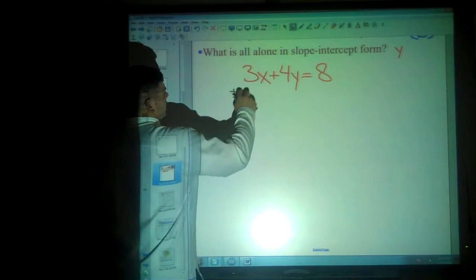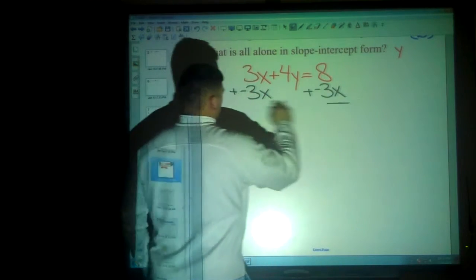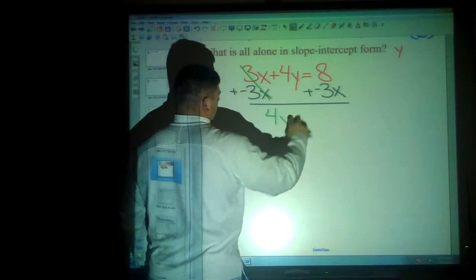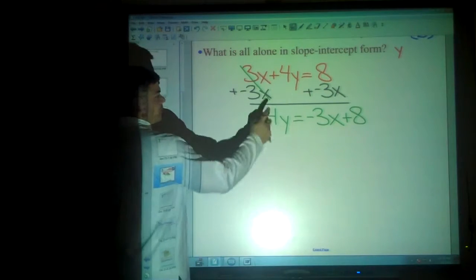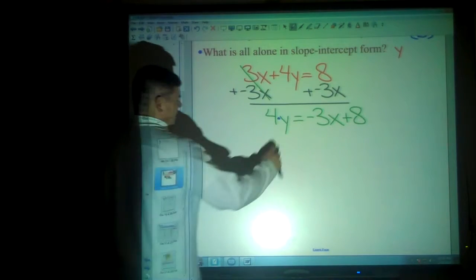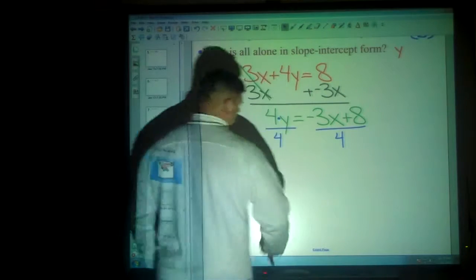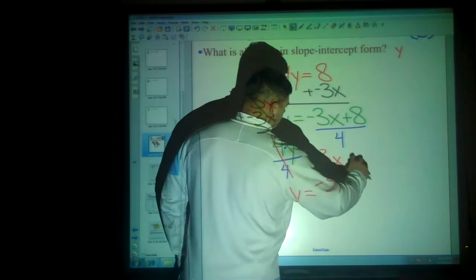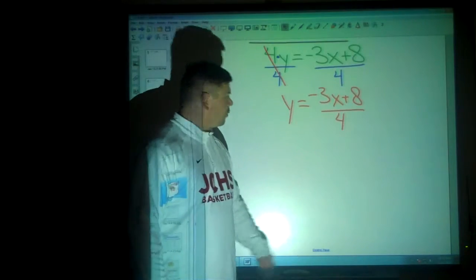So the first thing we should probably get rid of is the positive 3x, which means the inverse is negative 3x. Now 4y equals negative 3x plus 8. And if you want to completely get the y alone, it's 4 times y, so the opposite of multiplying by 4 is to divide by 4. And now you have y equals negative 3x plus 8 over 4, which sets you up very well for what we refer to as the heart-shaped division.